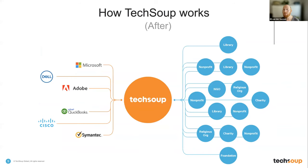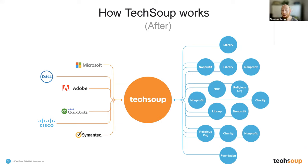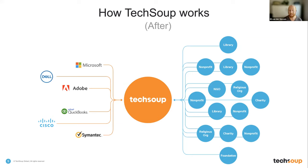So TechSoup stepped in and said we can solve this — we can make it easy for both parties. TechSoup has become this global central validation engine. When a nonprofit comes to techsoup.org or techsoup.global and creates their free account, they're essentially uploading a couple of documents — their last budget and proof of incorporation from the government — and you do this once. We store this and can use that exact same information with any of the other companies in our catalog.